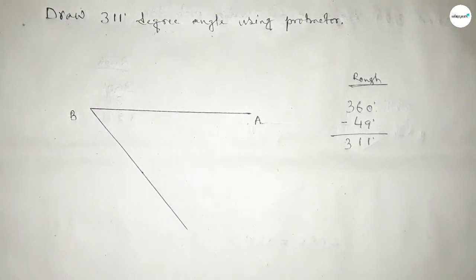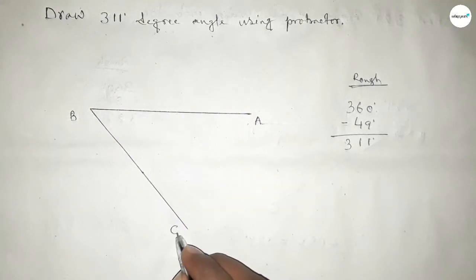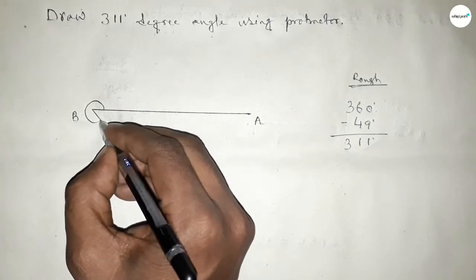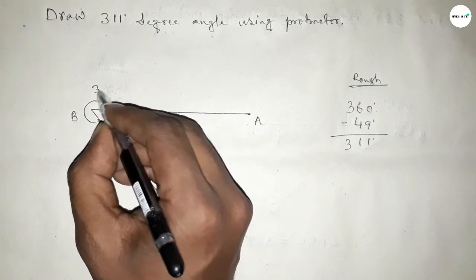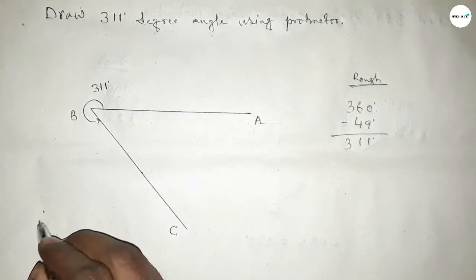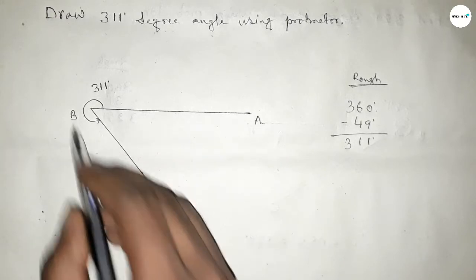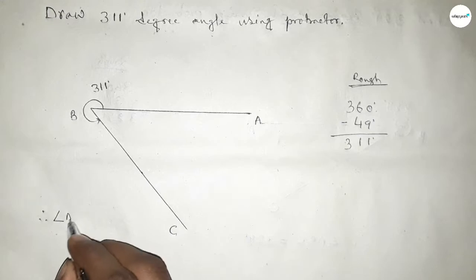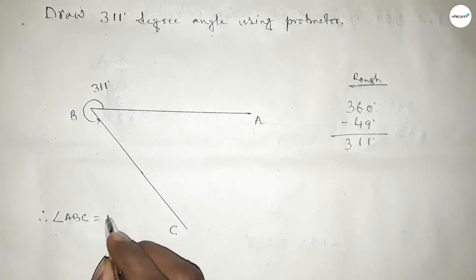So taking here point C, and angle ABC up to this, so this is angle 311 degree. So therefore angle ABC up to this, so this is angle ABC equal to 311 degree.